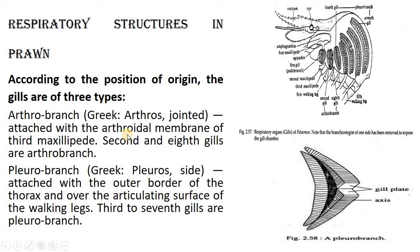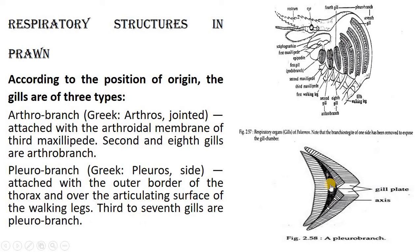The third type of gill is called pleurobranchs (pleuro = side), attached with the outer border of the thorax and over the articulating surface of the walking legs. The third to seventh gills are called pleurobranchs. One pleurobranch can be observed showing the gill axis and gill plates.